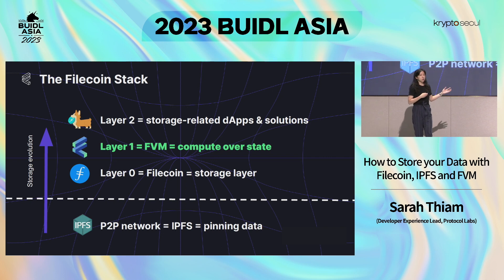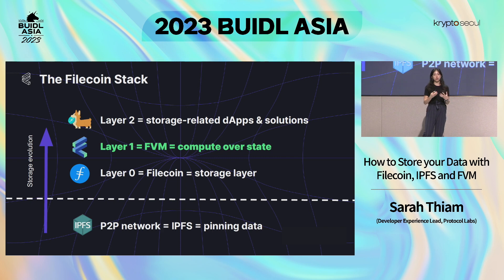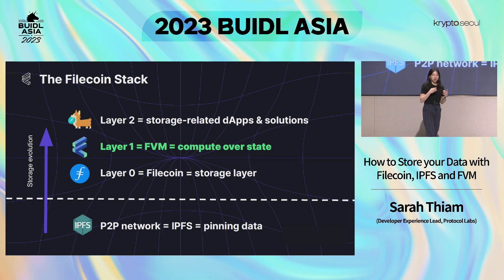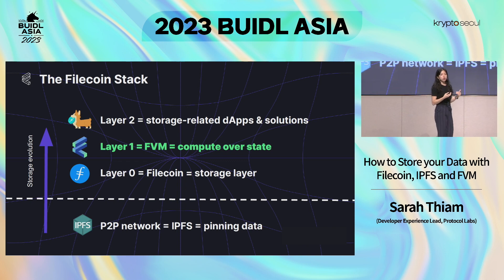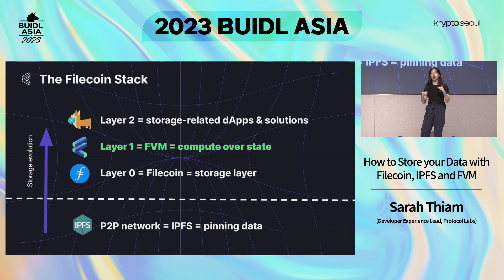Running through the evolution of storage on the Filecoin network: first we have IPFS, which is a peer-to-peer storage network — not a blockchain. You have different kinds of nodes and you can keep sharing and copying your data across them. On top of and separate from IPFS, we have the Filecoin blockchain protocol. Filecoin itself is a layer zero — our storage network — where we store metadata about storage deals made with our different storage providers.